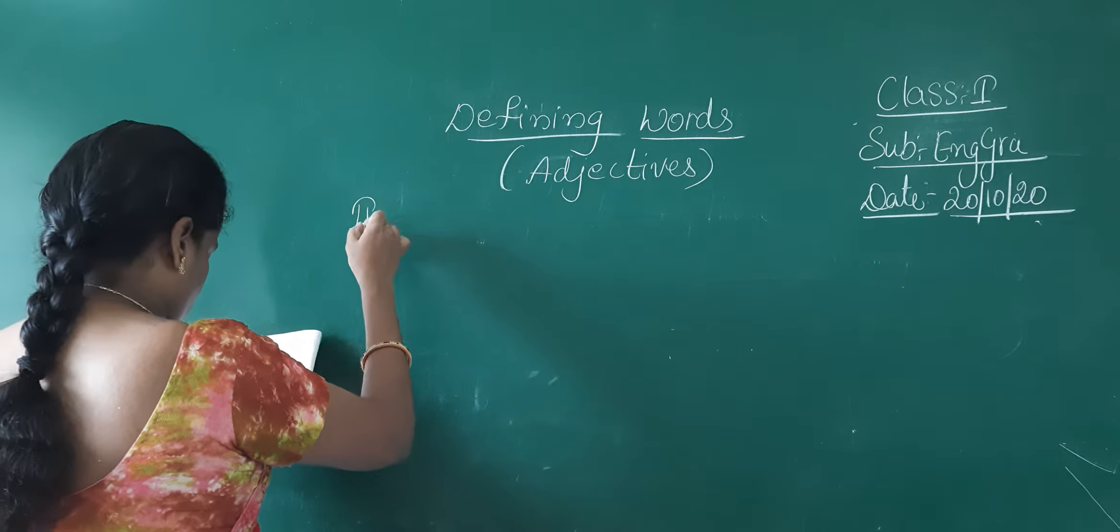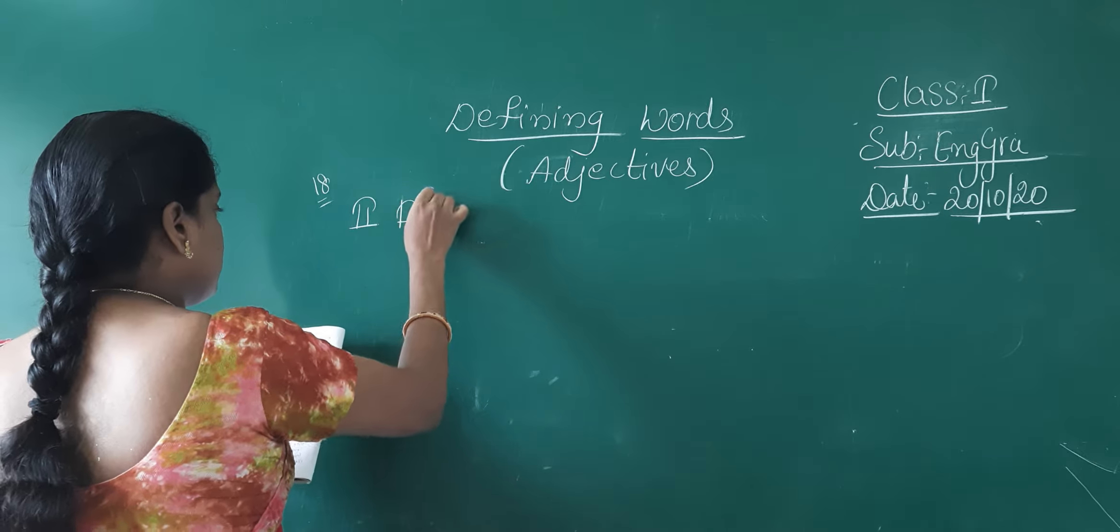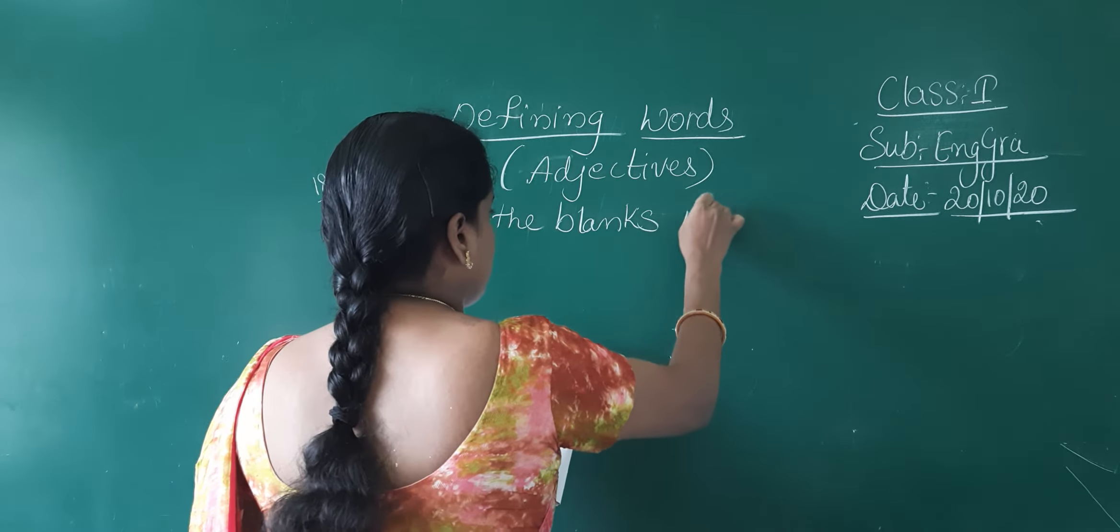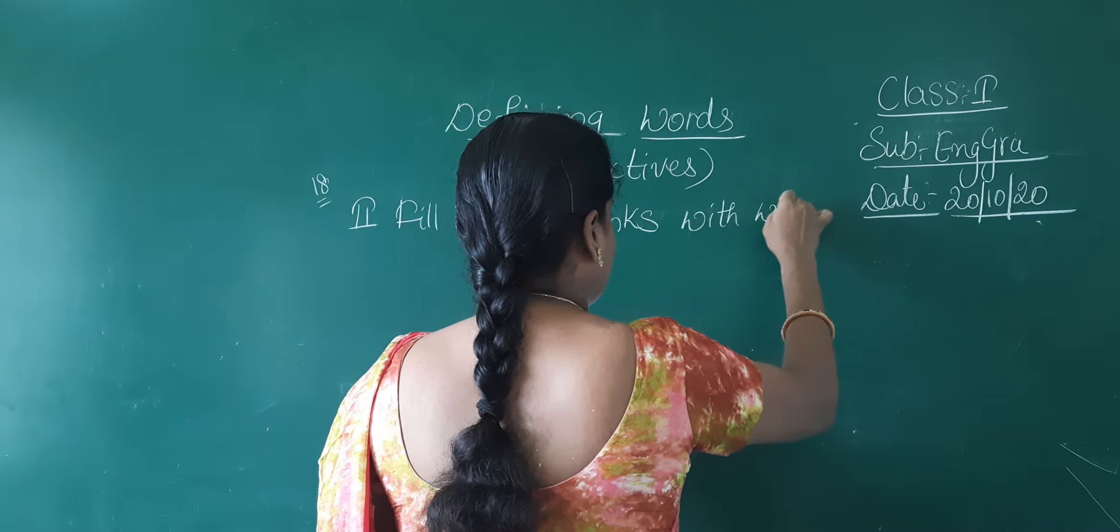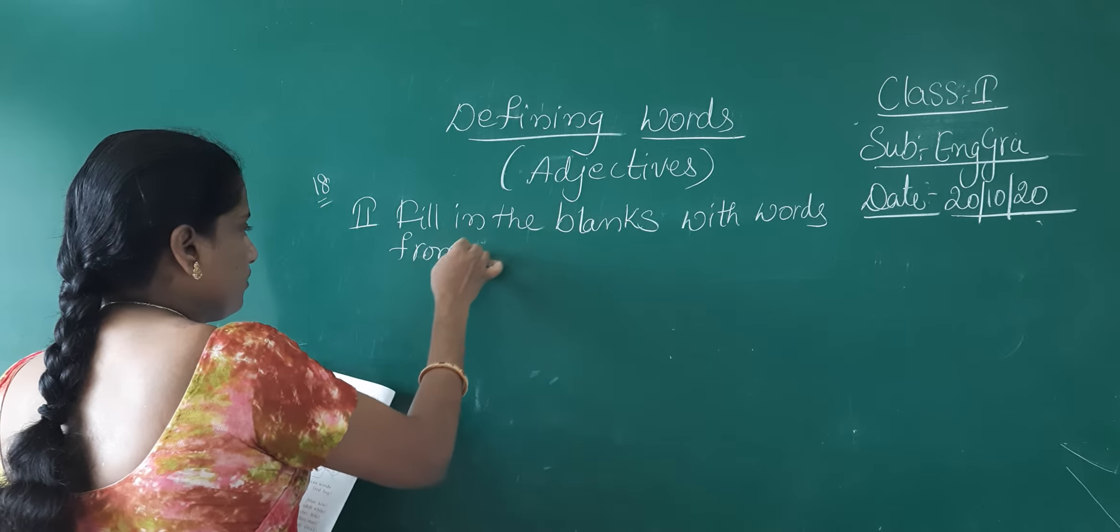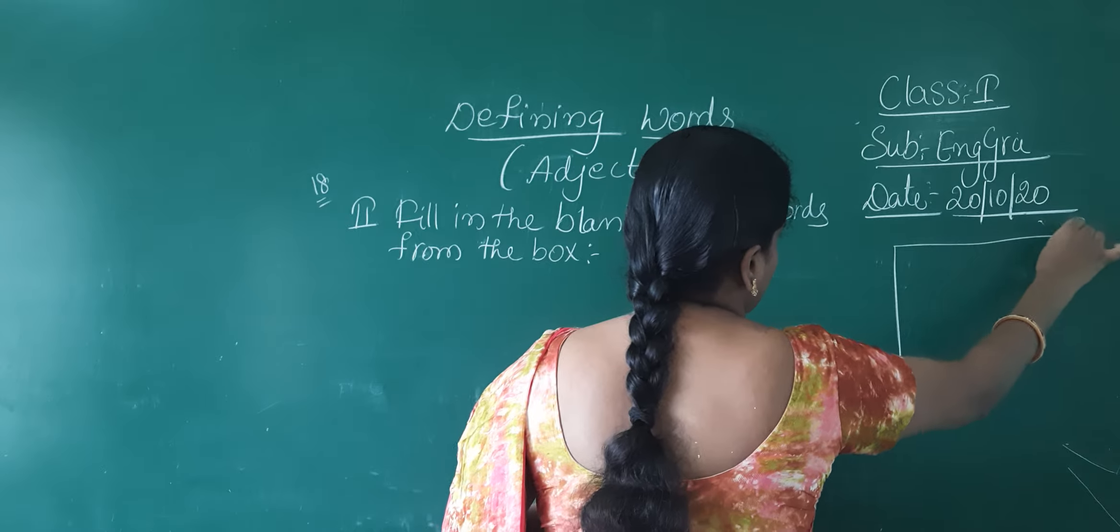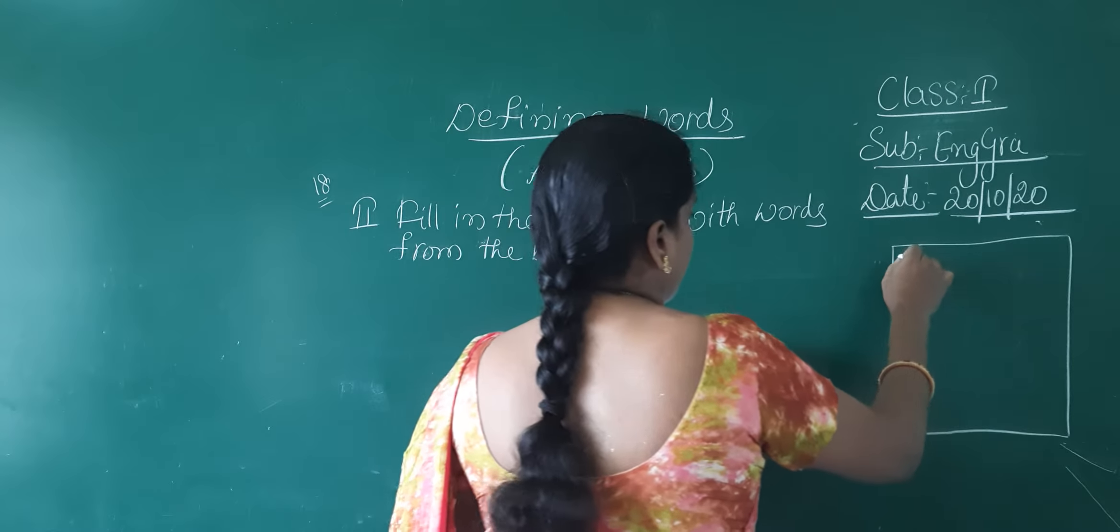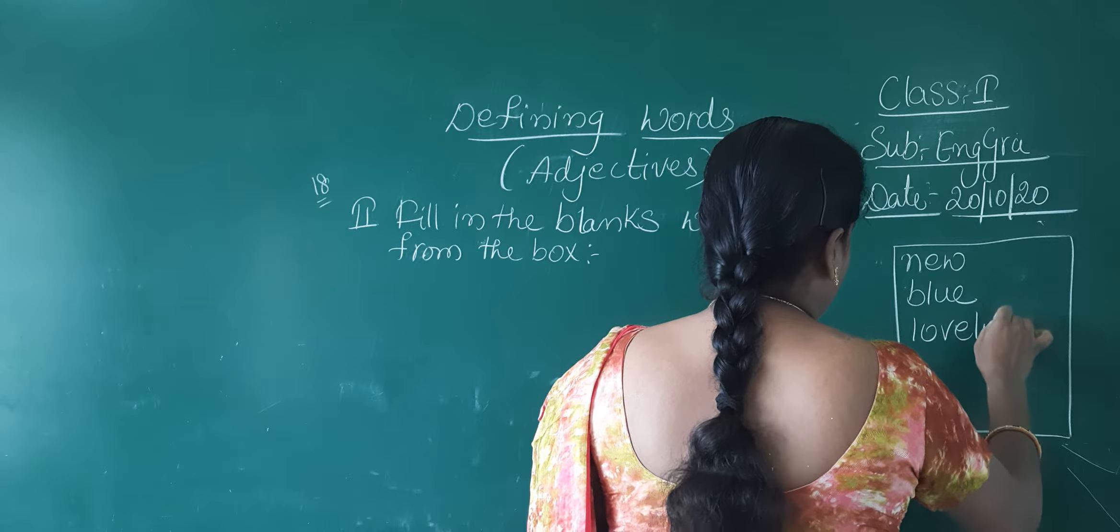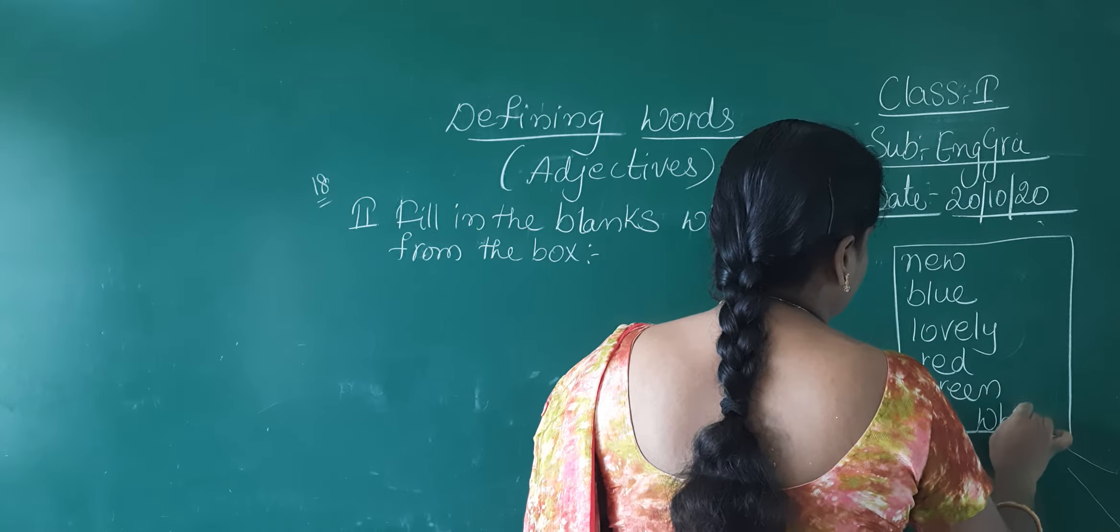Now let us discuss problem number two, given to you on page number 18. Filling the blanks with words from the box. Let us discuss one by one. From the box, let us draw the words here. Here I will give you some words. New, blue, lovely, red, green, white.